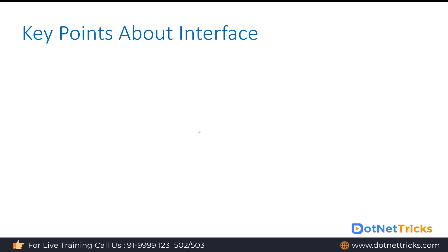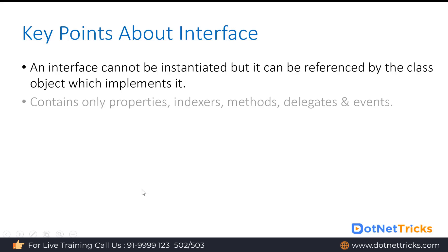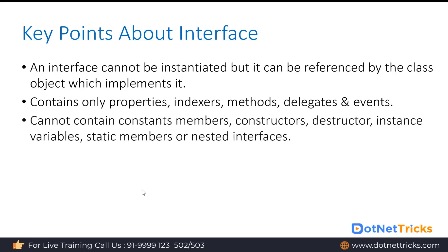An interface cannot be instantiated — you cannot create an interface object. But the object of a class that implements the interface can be passed as a reference to the interface instance. An interface contains only properties, indexers, methods, delegates, and events. An interface cannot contain constant members, constructors, destructors, instance variables, static members, or nested interfaces — these things cannot be defined within an interface.